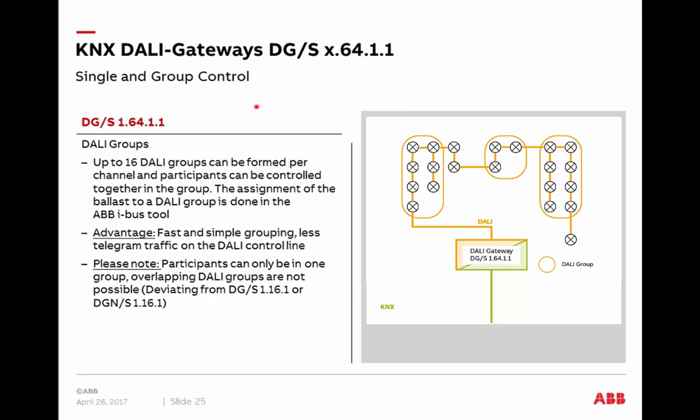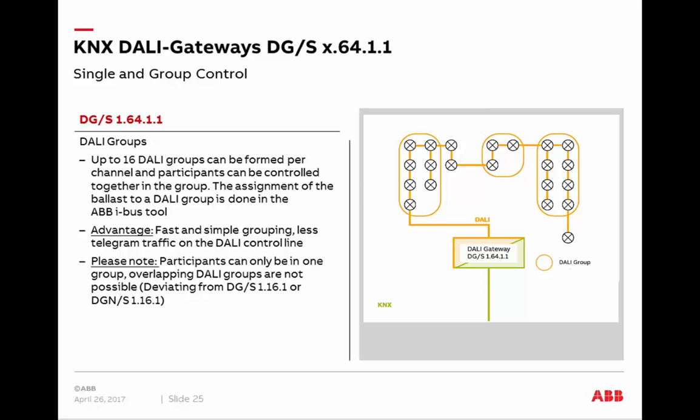We also have DALI grouping available inside these devices. DALI supports up to 16 DALI groups per channel. One advantage is less traffic on the DALI side, because the DALI system recognizes it as a group and only one command is sent. Please note one restriction: a DALI ballast in a DALI group cannot be a member in another DALI group — overlapping DALI groups are not possible. If you need overlapping groups, you must create KNX groups instead.